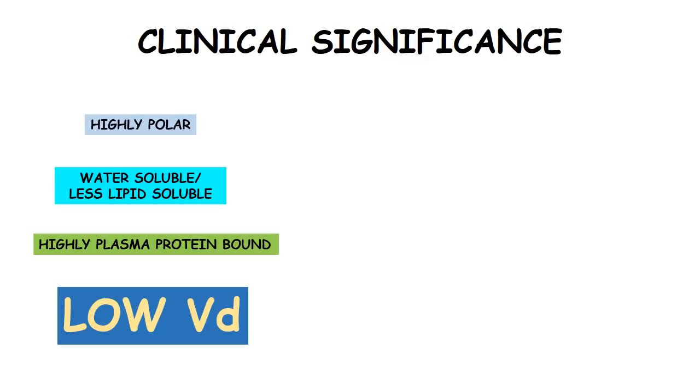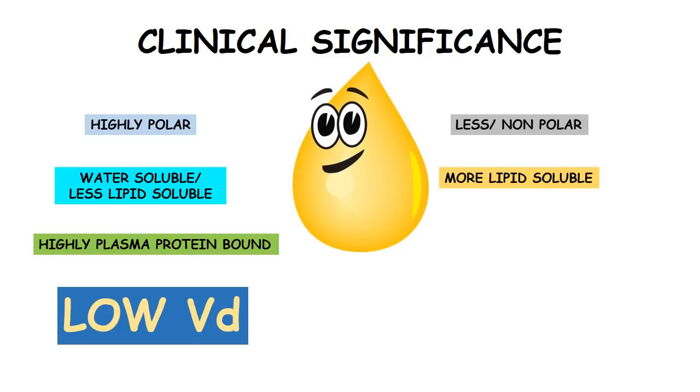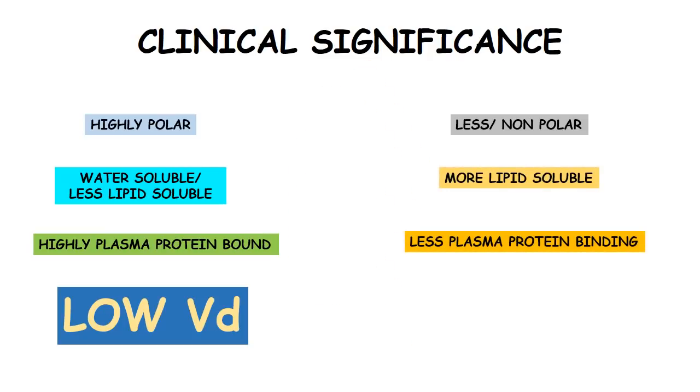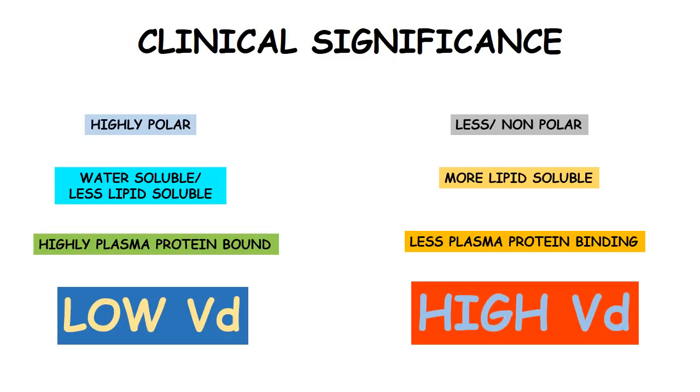On the contrary, a non-polar drug or a highly lipid-soluble drug or a drug that does not bind with plasma proteins that much can easily cross through lipid membranes and get distributed into several tissues of the body, leading to considerably lower plasma concentration, hence a very high volume of distribution.